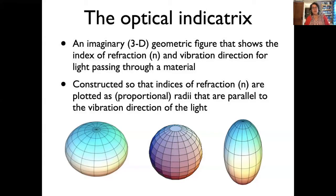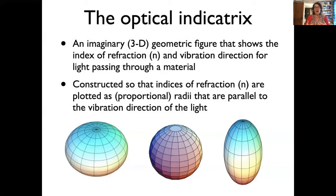The optical indicatrix is an imaginary three-dimensional figure that shows the index of refraction and vibration direction for light passing through the mineral. When we construct it, we make a three-dimensional shape that reflects the indices of refraction as the radii of an ellipsoid, a sphere, or a triaxial ellipsoid.